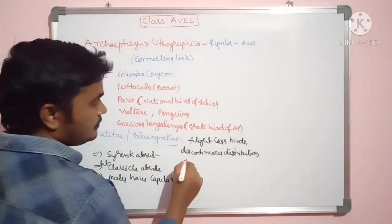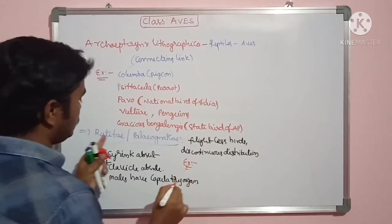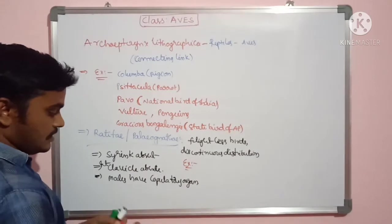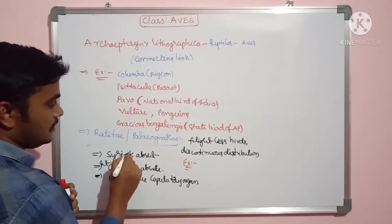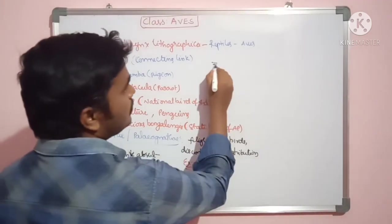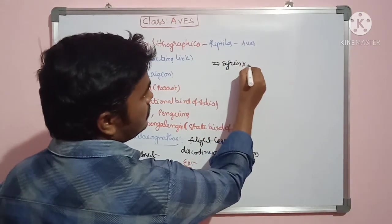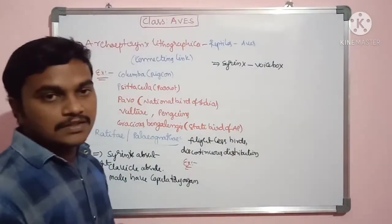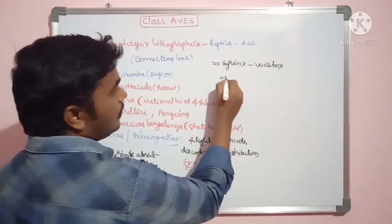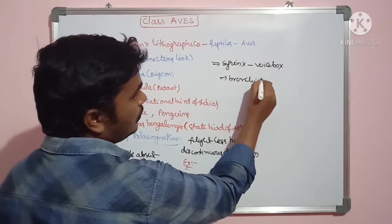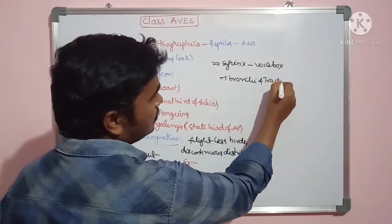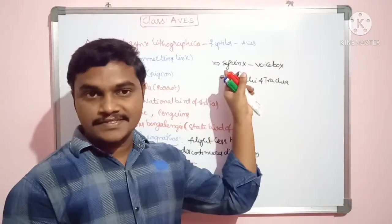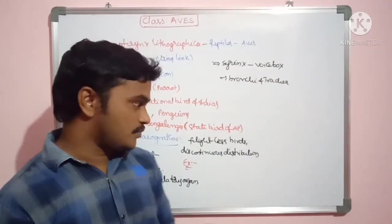Syrinx is a voice box in birds. It is present between bronchi and trachea. Normally in your body there is a larynx, that is voice box. In birds, syrinx is the voice box.